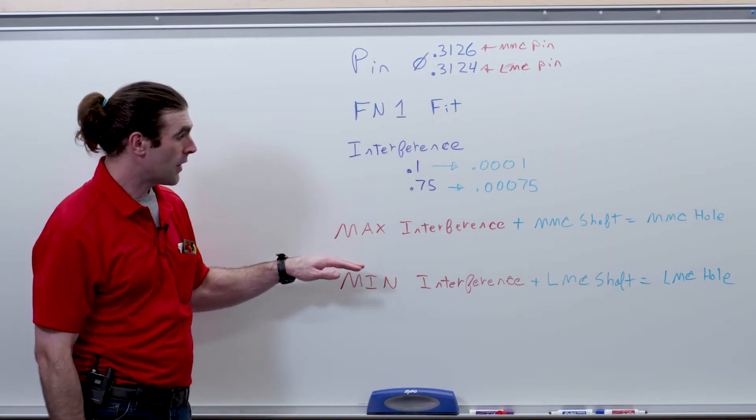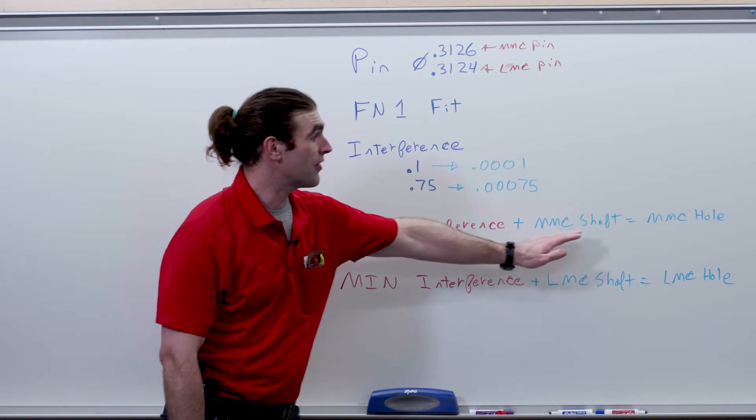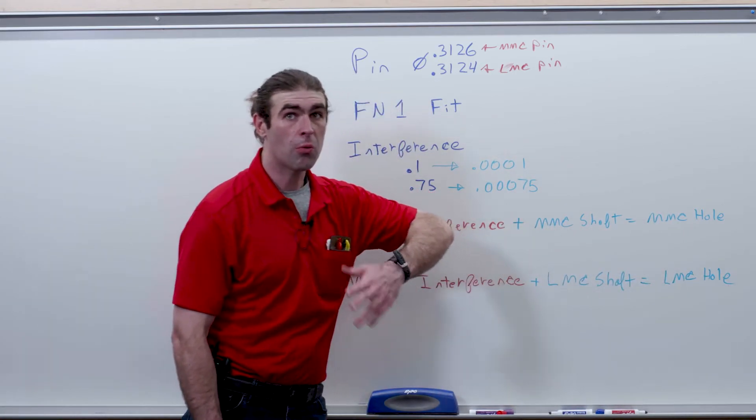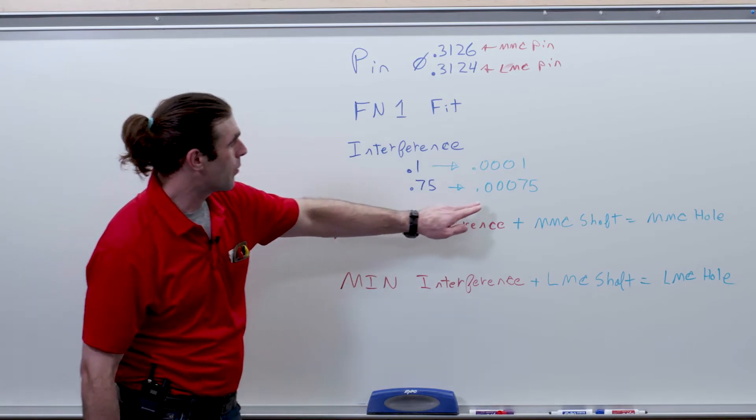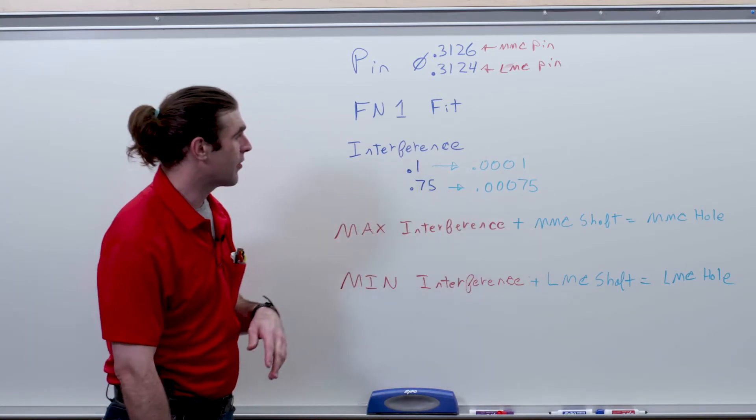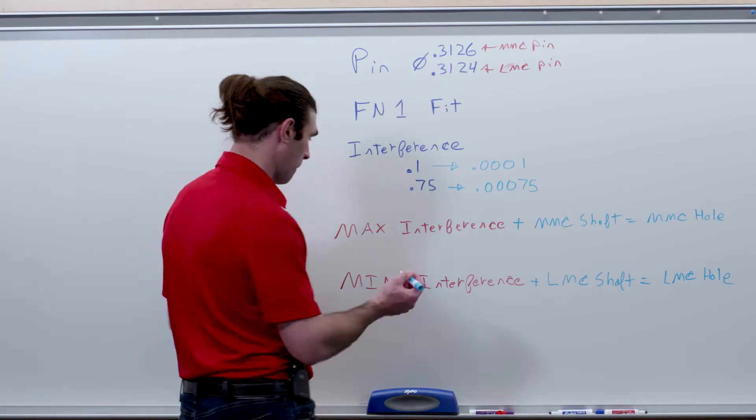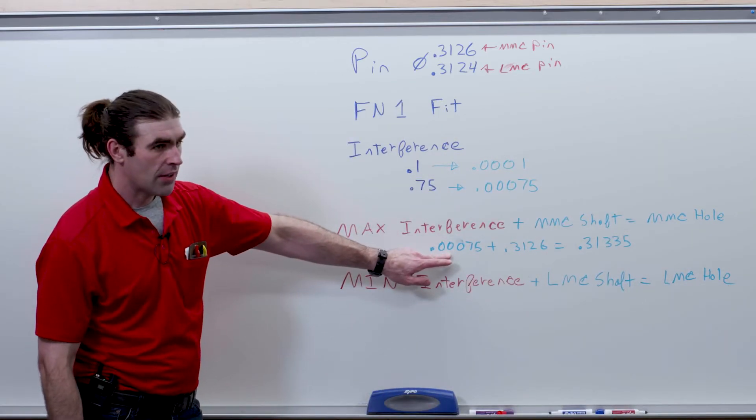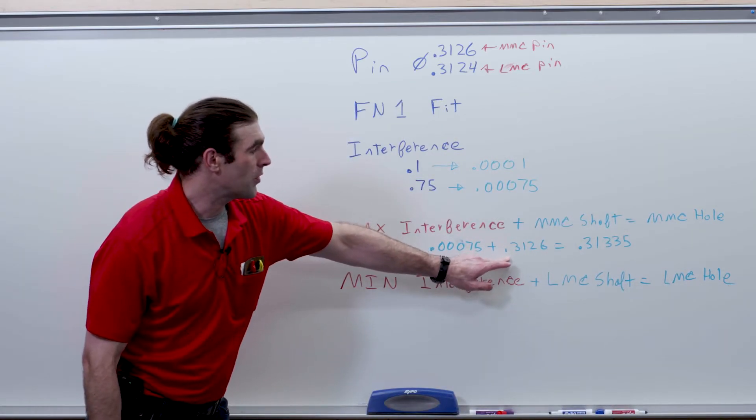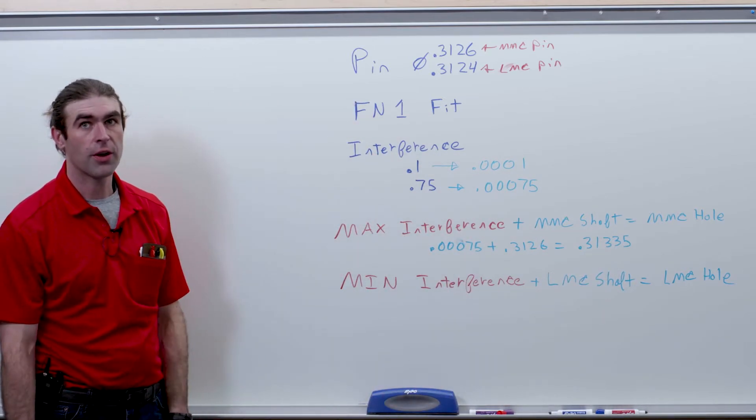So I'm just going to reorder things. The max interference plus the MMC of the shaft equals the MMC of the hole, one of the values we're looking for. So we're just going to add the maximum interference to the maximum size of the pin. So 7.5 tenths of a thousandths plus 0.3126 equals the MMC of the hole, the smallest the hole can be.